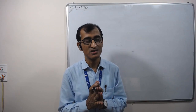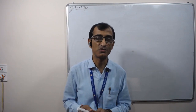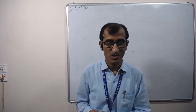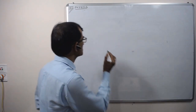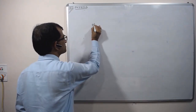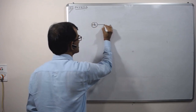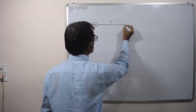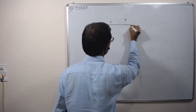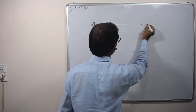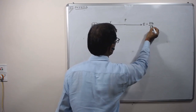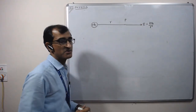Electric field means the field around a charge in which another charge experiences a force, and it is another way to explain the electric force between two charges. The strength of electric field due to a charge plus q1 at a distance r is given by kq1 upon r². It is the expression of electric field.